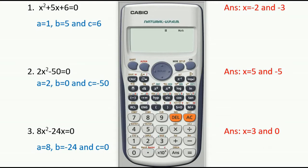In question number one, you can see there is a quadratic equation in the form of ax² + bx + c = 0. The question given is x² + 5x + 6 = 0. Now you have to solve this equation using a scientific calculator.